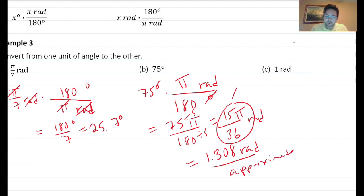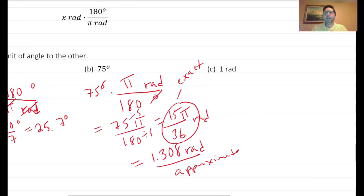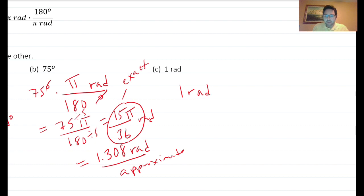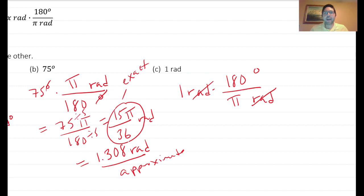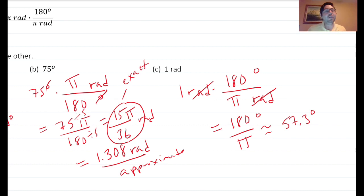Finally, convert 1 radian to degrees. Multiply by 180 degrees over pi radians — the radians cancel — giving 180 divided by pi degrees. Since pi is approximately 3.14, this equals about 57.3 degrees. That confirms the earlier definition that one radian is approximately 57.3 degrees. That's it for the video — hope you learned a few things and I'll see you in the next one.